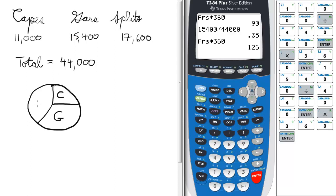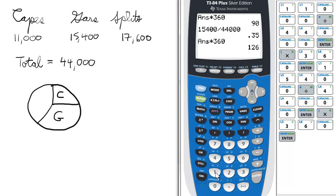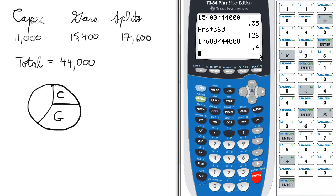Lastly, the split should be this amount, but let's check. So 17,600 divided by 44,000, and that's 0.4, 40%, which is about there. That looks about 40% of the entire circle.